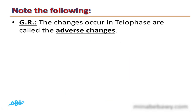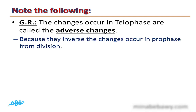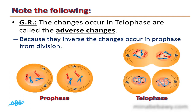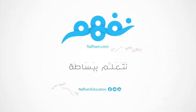Give reason: the changes that occur in telophase are called the adverse changes. This is because they are the inverse of the changes that occur in prophase. In prophase, the nuclear membrane disappeared and spindle fibers appeared, but in telophase the spindle fibers disappear and the nuclear membrane is formed.